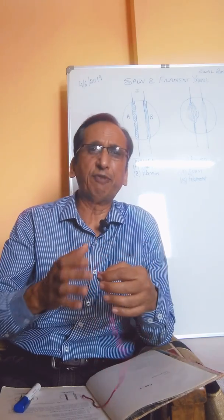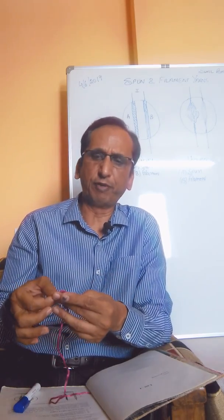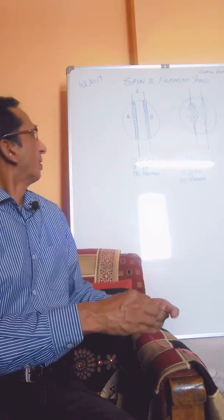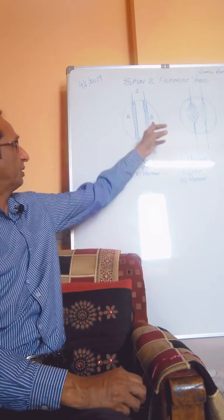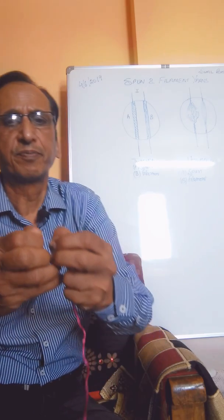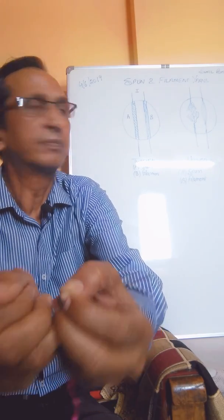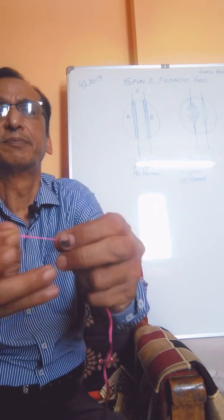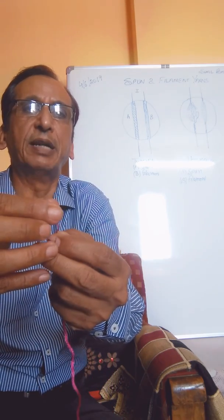Now, how to identify spun yarn with respect to filament yarn. As I have drawn on the board, A is the spun yarn and B is the filament yarn. When we untwist spun yarn, the fibers are separated and the yarn is broken, as shown here. But in the case of filaments, if we untwist, the filaments are simply separated.